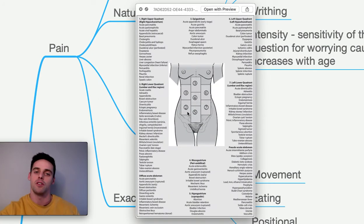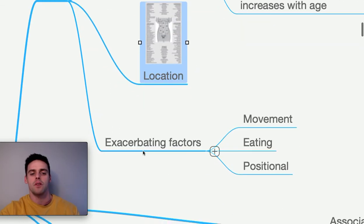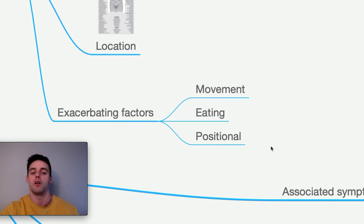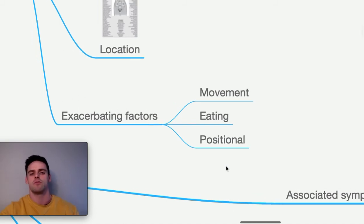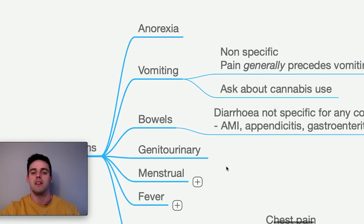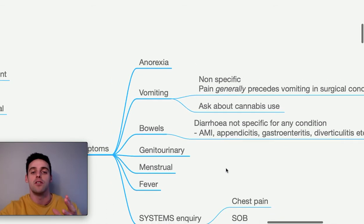Location is important — even identifying pain as midline at least tells you it sounds visceral. Exacerbating factors: is it worse with movement, eating (peptic ulcer, gallstones, biliary colic), or position (worse lying back as in gastric reflux)? Try to get a general overall picture. Associated symptoms include anorexia (not very specific), vomiting — in surgical conditions pain generally precedes vomiting but not always — and bowel changes like diarrhoea, which can occur in mesenteric ischaemia, appendicitis, gastroenteritis, or diverticulitis.